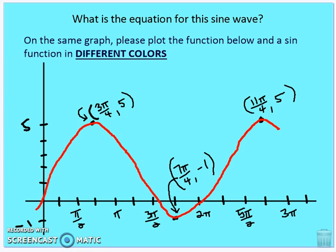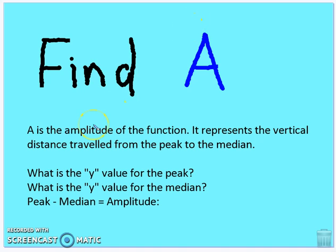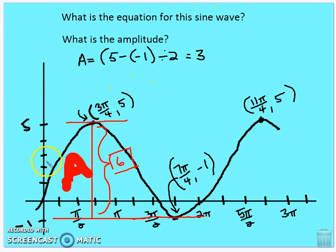Now we're going to move on to defining a trigonometric function based on a curve. I'll walk you through step by step. The graph has a peak at 5 and a trough at negative 1. We're going to write a sine function for this curve using the formula y equals a times sine of b times (x minus h) plus k, picking off one parameter at a time. First, we'll find the amplitude as the deviation from the peak to the median.